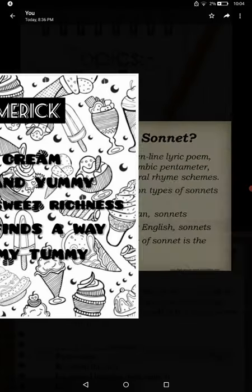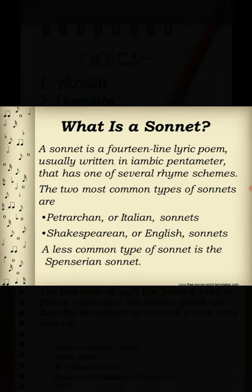Next is the sonnet. A sonnet is a poem of 14 lines using a formal rhyme scheme, typically having 10 syllables per line in English. They were invented by the Italian poet Giacomo da Lentini. Sonnets are often written about love and nature.